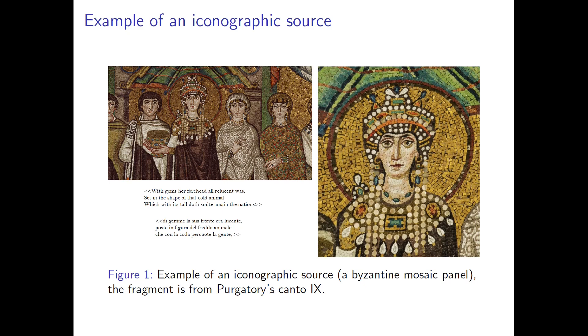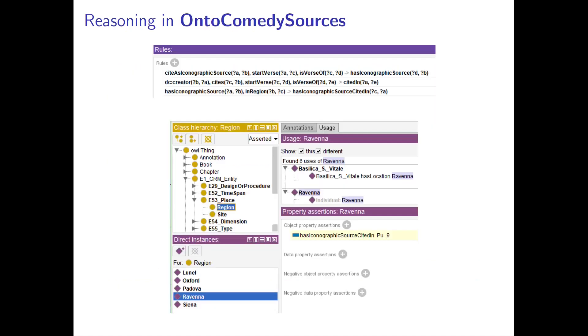In this slide, you can see an example of an iconographic source. The image shows a Byzantine mosaic panel, executed in the year 520 and currently conserved in the Basilica of San Vitale, which depicts Empress Theodora. In this case, the corresponding fragment is from canto number 9 of the Purgatory. The scholar suggests that, when writing about the aurora, Dante was inspired by the ornaments in Theodora's crown.